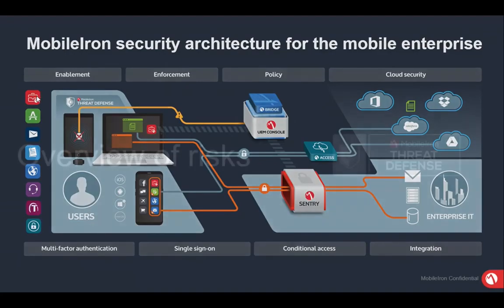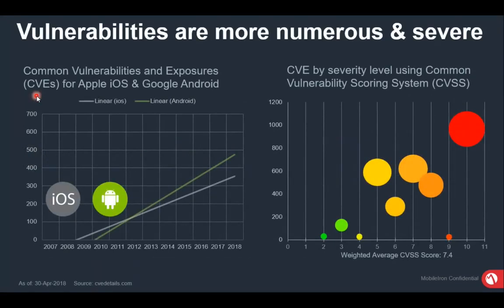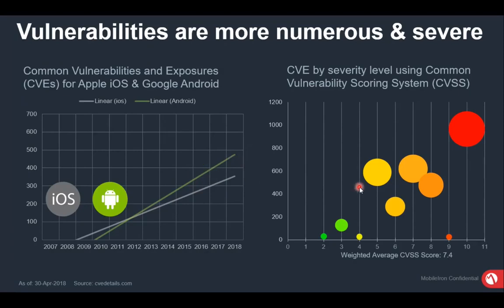Looking at the overview of risk: initially, vulnerabilities for iOS and Android were very minimal. When iOS started around 2009, people were gradually using mobile devices for email or internal applications. But as days went by — by 2018 — the number of users increased significantly, and hackers found ways to exploit this. The vulnerabilities and exposures for iOS and Android increased as user numbers grew.